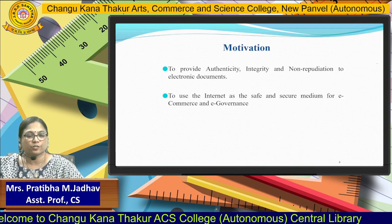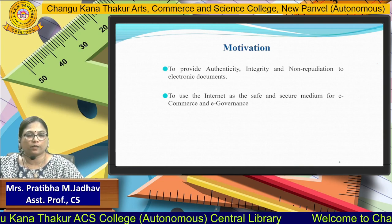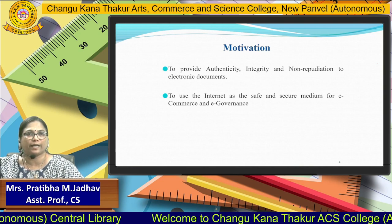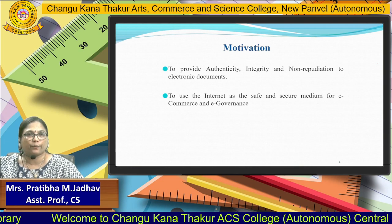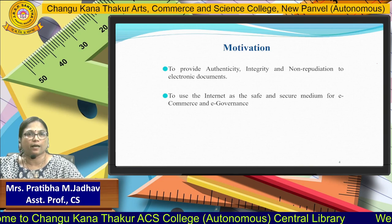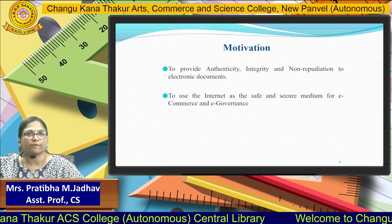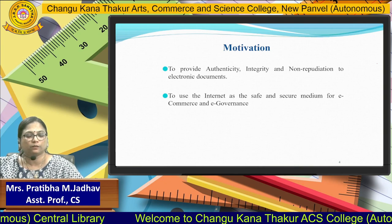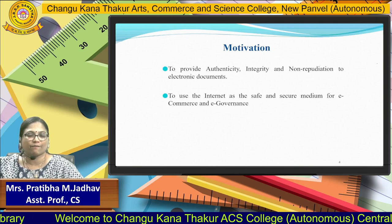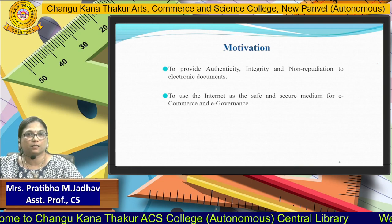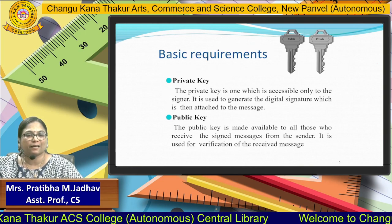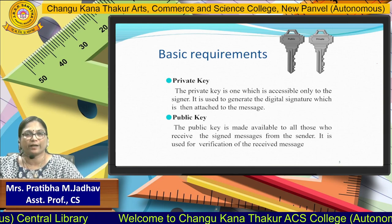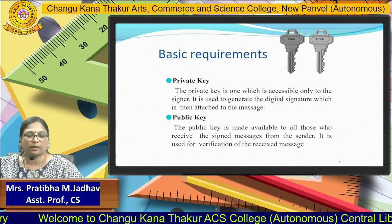The motivation behind digital signatures is to provide authenticity, integrity, and non-repudiation. Authenticity means the person is identically authenticated. Integrity means there is no modification to the document when it is being shared. Non-repudiation means the sender is authenticated and must accept that whatever document is seized was seized by that person. Digital signatures also facilitate the use of the internet as a safe and secure medium for e-commerce and e-governance. The basic requirement is that two keys are used, making this an asymmetric algorithm used for encryption and decryption.